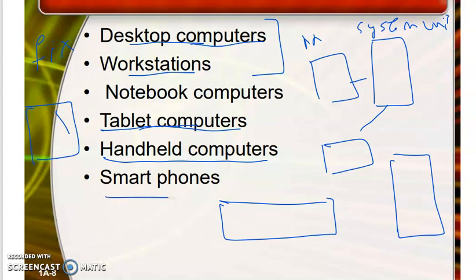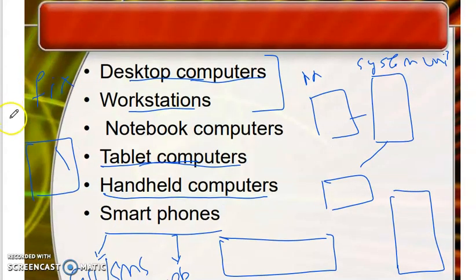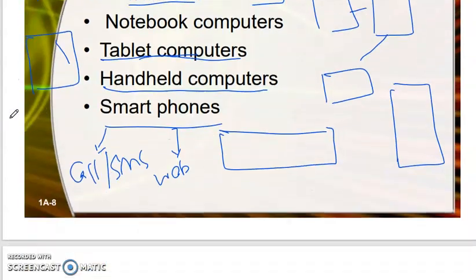The last category is called smartphones. A smartphone provides two main features: the basic functionality of calls and SMS, and the ability to access websites and web connectivity. With a smartphone, we can also play different games, play music, and watch movies.